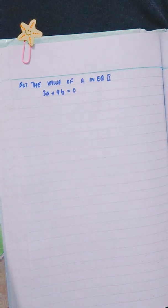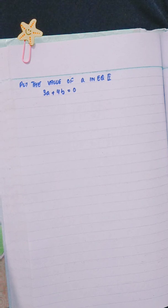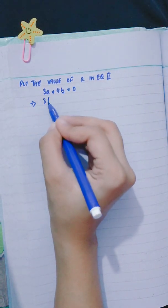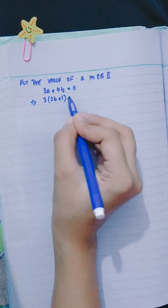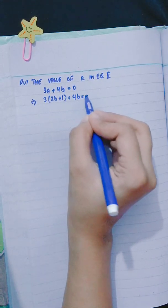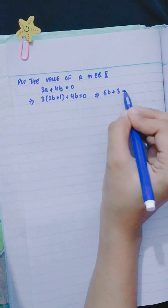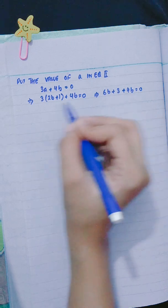Put the value of a in equation number 2. Equation 2 is 3a + 4b = 0. So 3(2b + 1) + 4b = 0. This gives 6b + 3 + 4b = 0.